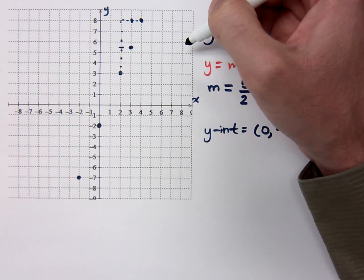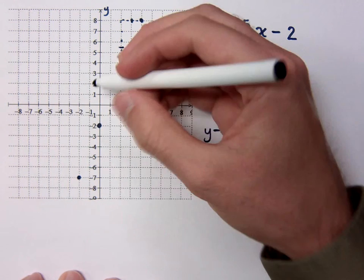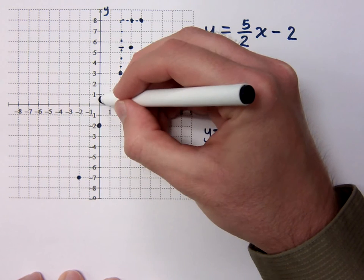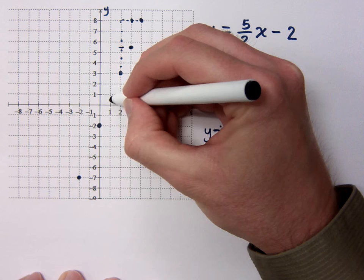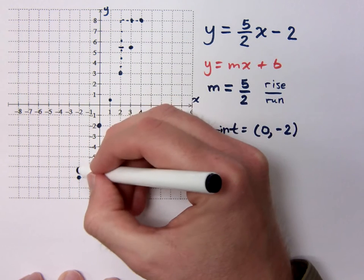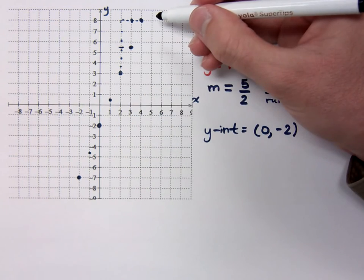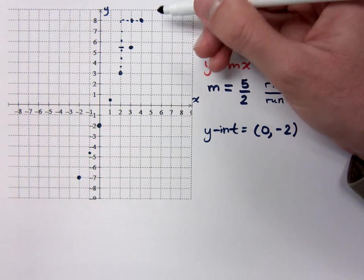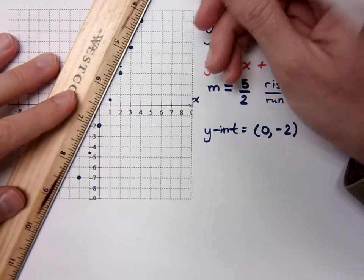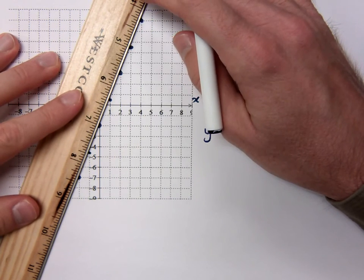So the more points I have, the more accurate my graph is going to be. I can do the same thing here. Up 2.5 and over 1. Up 2.5 and over 1. So the more points I have, the easier it is to graph this guy, especially when you don't have a straight edge. But today, I am prepared.